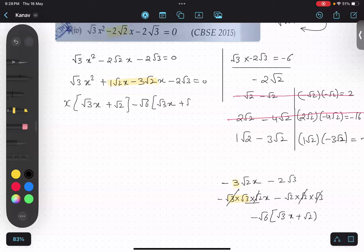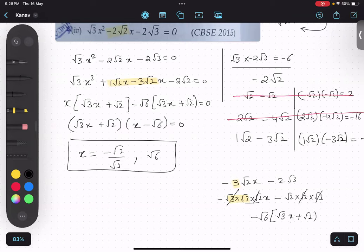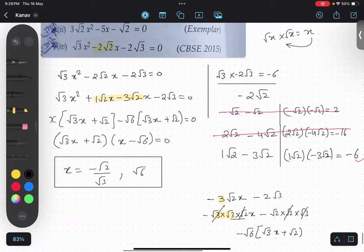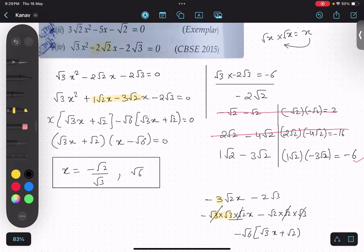√3x plus √2 equals to 0. So √3x plus √2 is one of the factor. x minus √6 is another factor. So the two answers are minus √2 upon √3 and another answer is √6. That is the final answer. Any doubt in this? No. One of the toughest question I will tell you is this. So please practice this kind of question. There is one more video already uploaded on this kind of question. So you can try that.